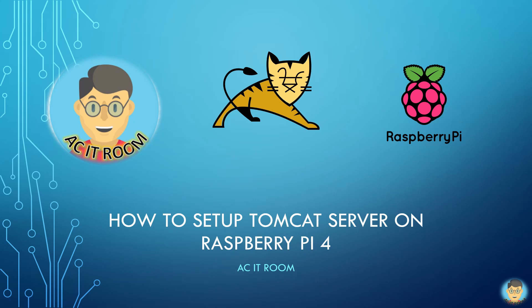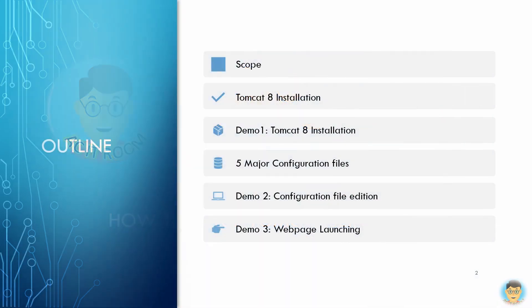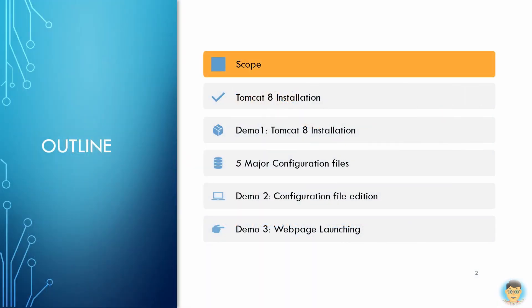Hi everyone, welcome to ACIT room. Today we will introduce how to set up Tomcat server on Raspberry Pi 4. Before we start, let us go through the outline of this video.